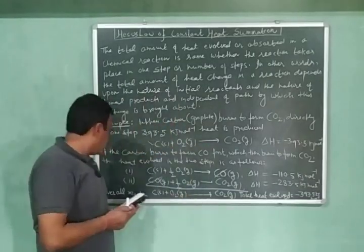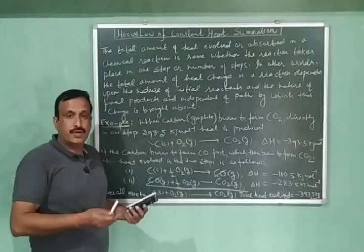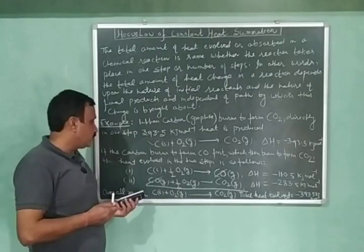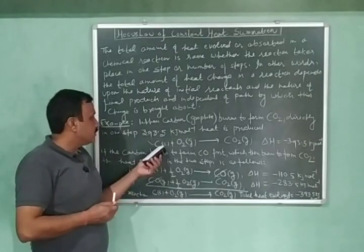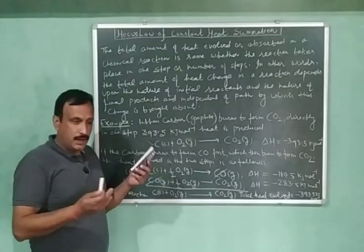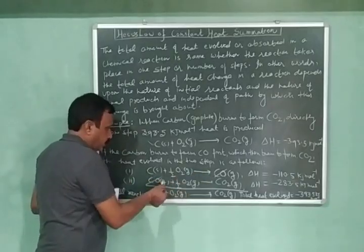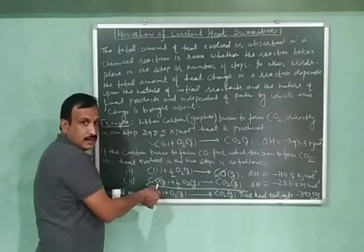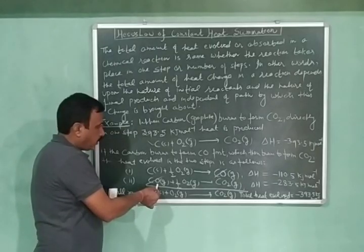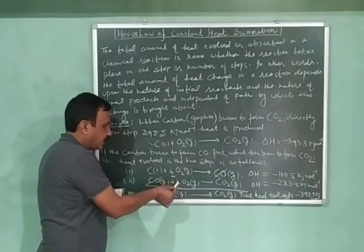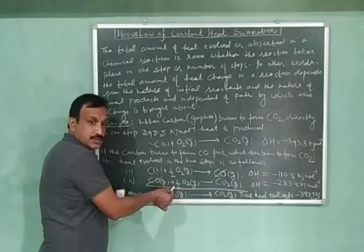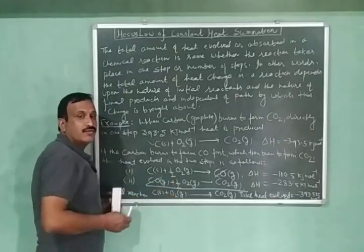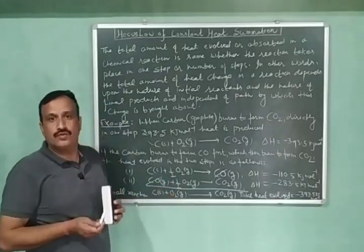And the overall reaction is same. After addition of these two equations, we will have the same equation. Because the carbon monoxide here and here are in opposite sides and they will cancel each other. And we have half mole of oxygen here and half mole of oxygen here. They are on the same side and will be added. And after addition, we will have one mole of oxygen.